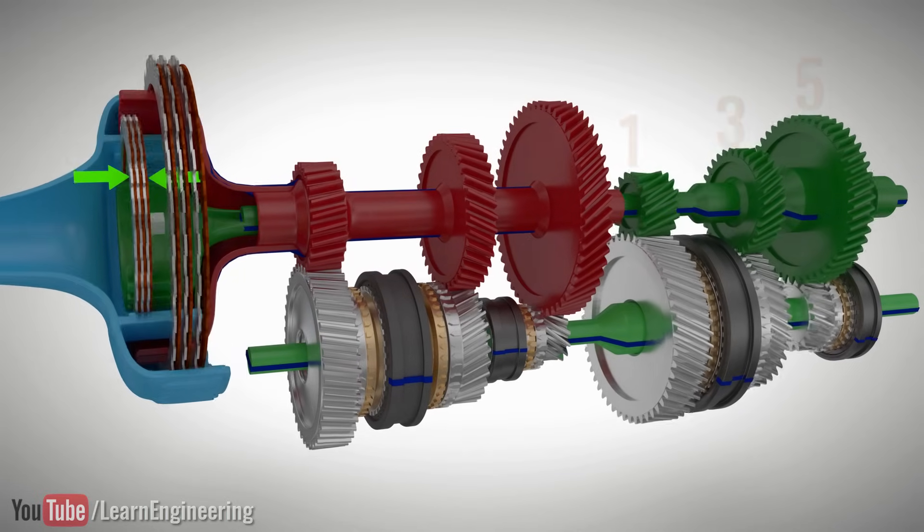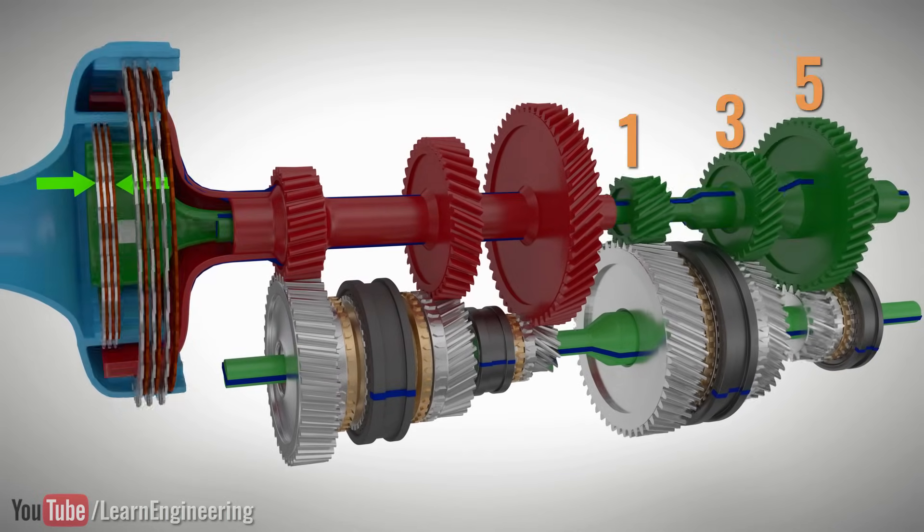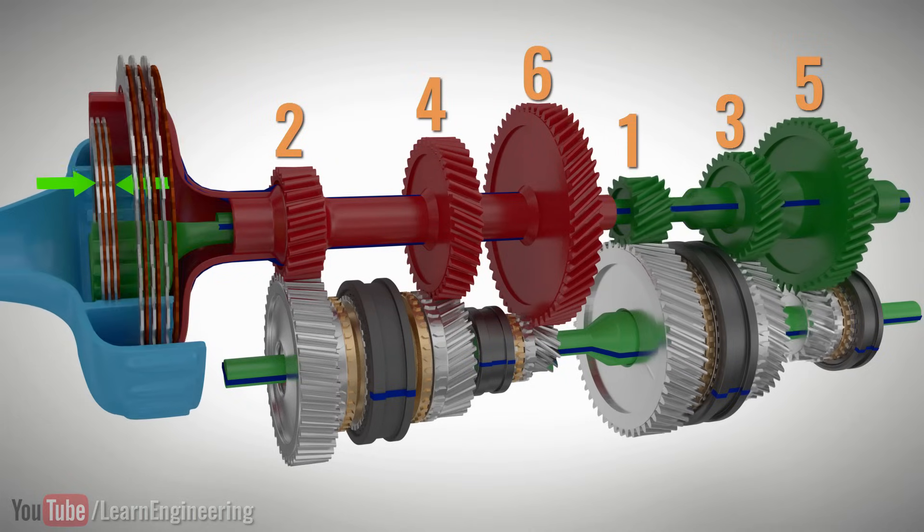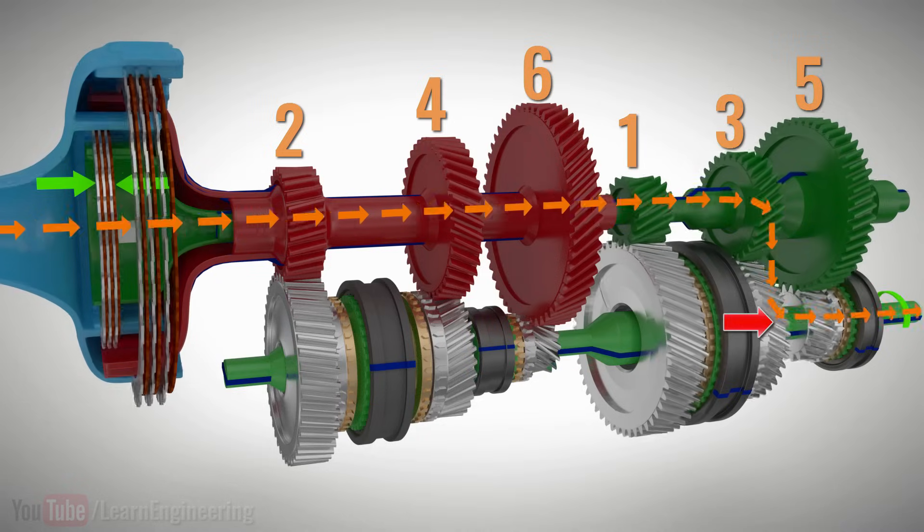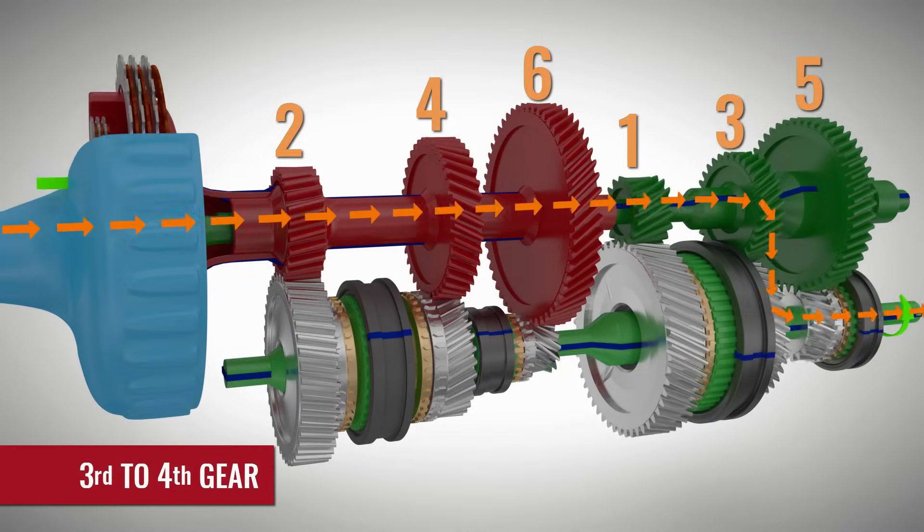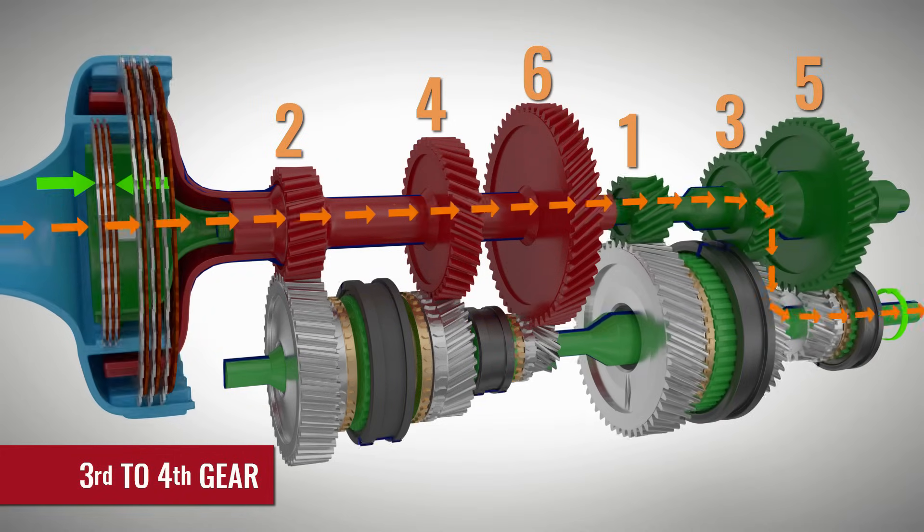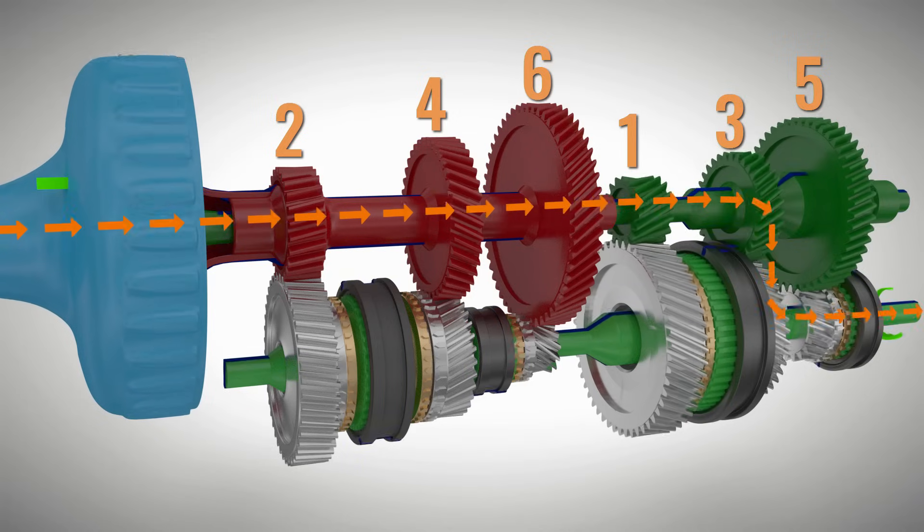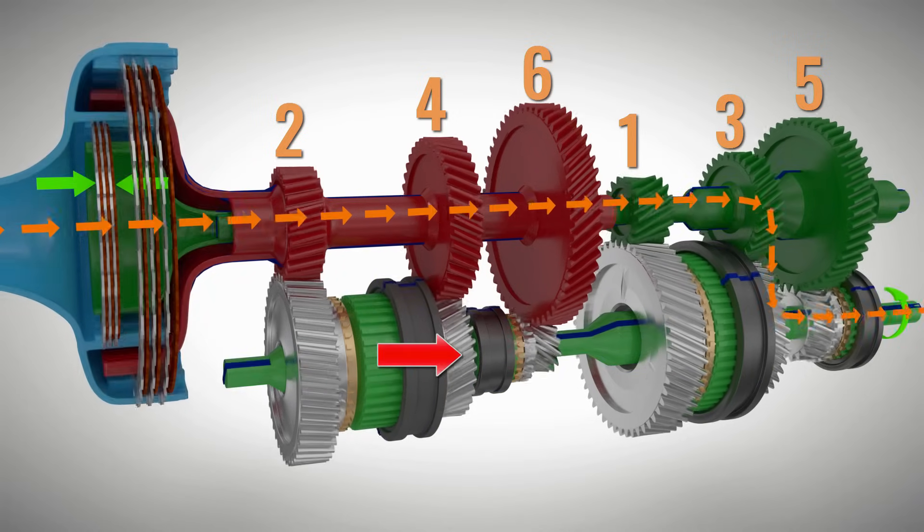The odd gears are connected to the green set and the even gear numbers are connected to the red set. Assume you are in third gear. Suppose you want to change to the fourth gear. In a DCT, the sleeve of the fourth gear is connected in advance, even when the third gear sleeve is already connected.